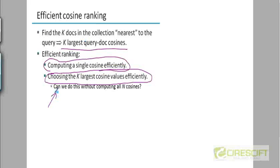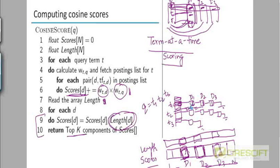Can we do this without computing all the n cosines where n is the number of documents in the corpus? The answer is yes, based on what I told you that we are not worried about documents that are not in any of these three postings lists. Most of them will not be in these postings lists, assuming these are relatively rare terms.